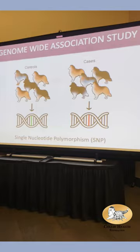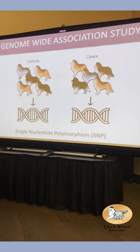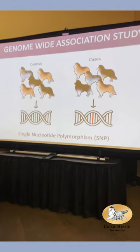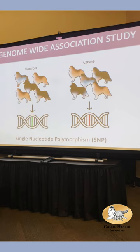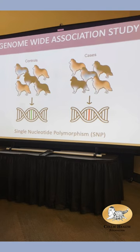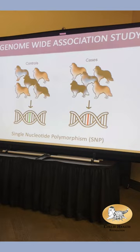I undertook a genome-wide association study — a GWAS. This is my approach of choice. We collect two populations: a group of Shelties that has lance canine, and a group that does not. We want these two populations to be exactly the same otherwise — if I have merles with lance canine, I need merles without. If I have Shelties from Europe with lance canine, I need Shelties from Europe without. And ideally nobody in the study shares parents. That's how we design a GWAS.